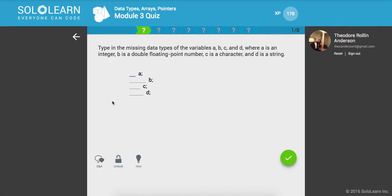Type in the missing data types of the variables A, B, C, and D, where A is an integer, B is a double, C is a character, and D is a string. Cool. So let's run that. Awesome.